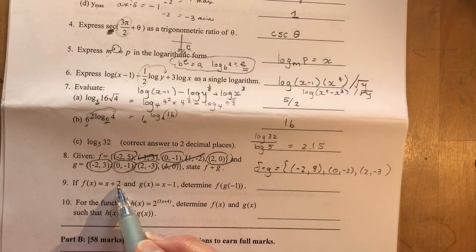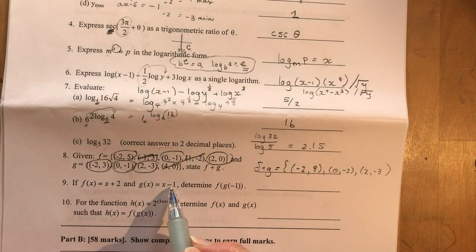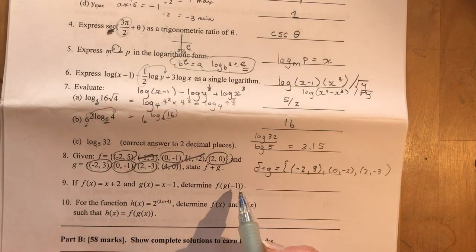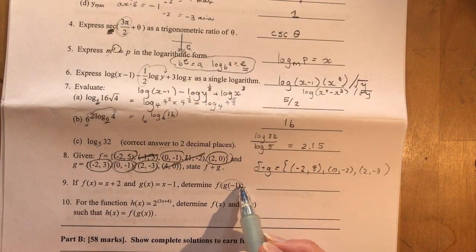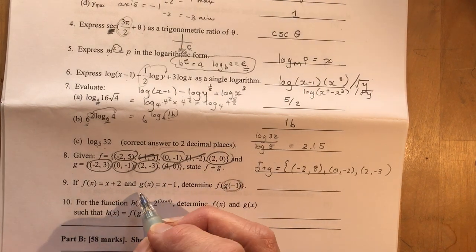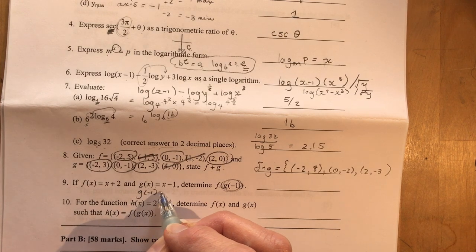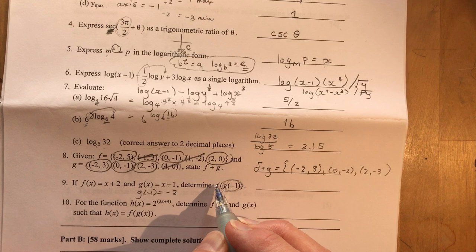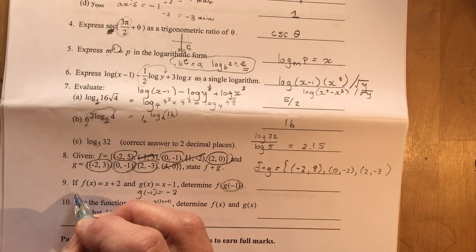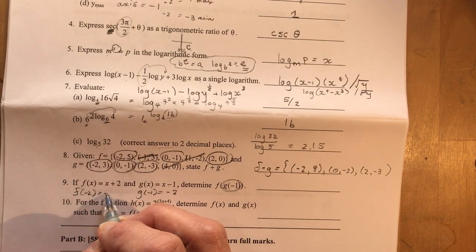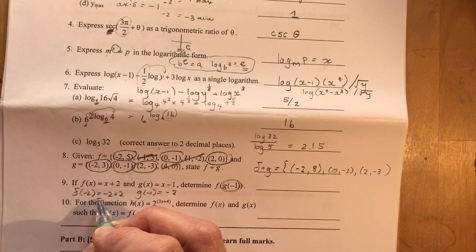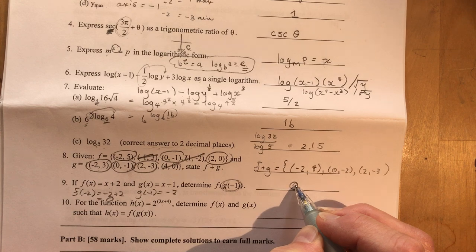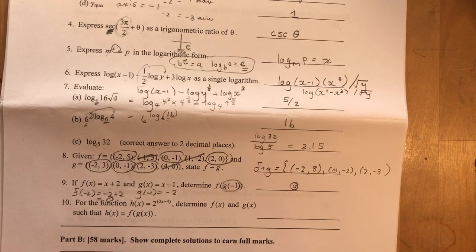Okay. If F at X equals X plus 2 and G at X equals X minus 1, determine F at G at minus 1. So remember to start on the inside here. I want to know what is G at minus 1. So G at minus 1 is going to be minus 1 minus 1 is minus 2. And now F at minus 2. So I'm going to put that in over here. Minus 2 plus 2 and that's going to be 0. So my answer is 0. I'm happy, happy face.